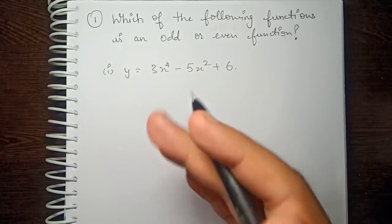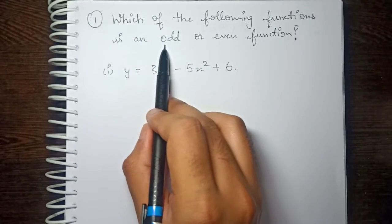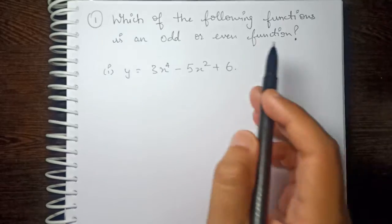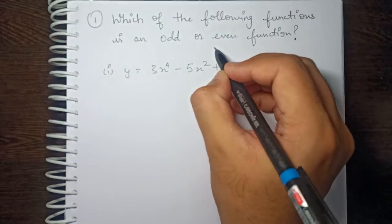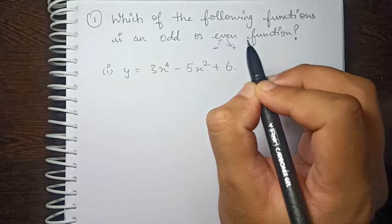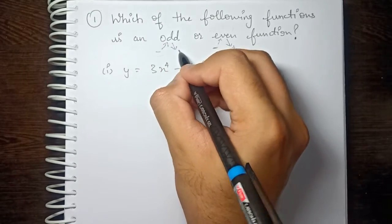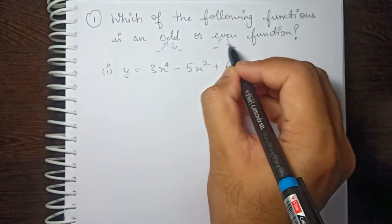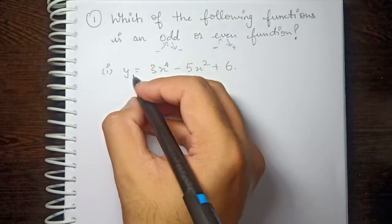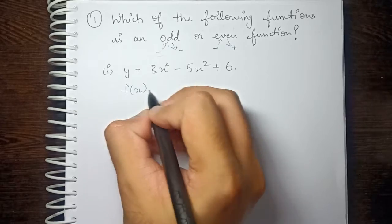For odd or even functions: an odd function is when we get a negative input and we get a negative output. When we get a negative input and get a positive output, that is an even function. So odd means negative input gives negative output; even means negative input gives positive output.